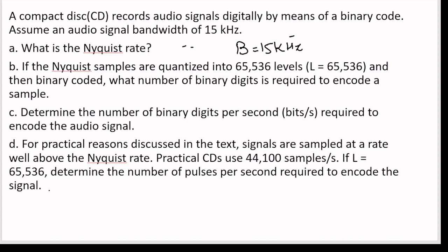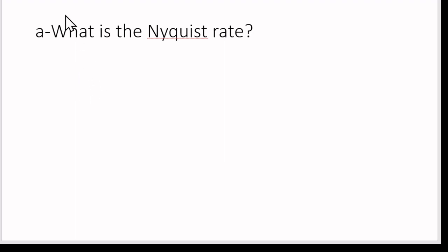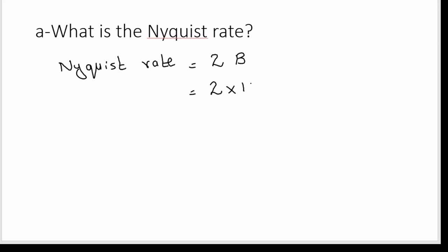Let us solve each part one by one. Part A: what is the Nyquist rate? We know that the Nyquist rate is equal to two times the bandwidth of the signal, so the Nyquist rate equals 2B — two times the bandwidth of the message signal, which is the audio signal. That bandwidth is given as 15 kilohertz, so the Nyquist rate is equal to 30 kilohertz.